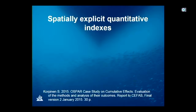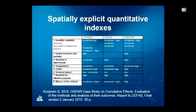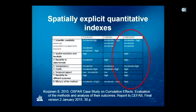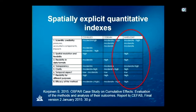Looking first at spatially explicit quantitative indexes, there are several types that have been developed. Korpinen did an evaluation of which were most suited to assess the combined impact of several factors, and his conclusion was that a method developed in the Harmony project was best suited. This was based on many criteria. The things I'm going to discuss apply to all these spatially explicit quantitative indexes.